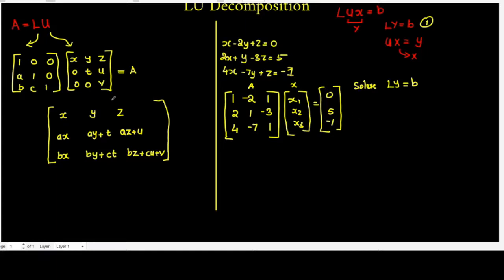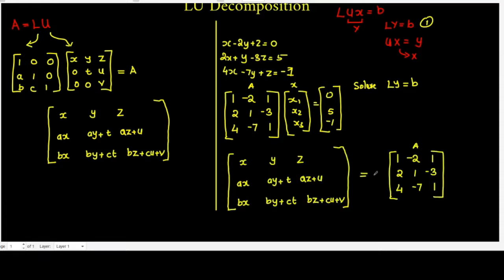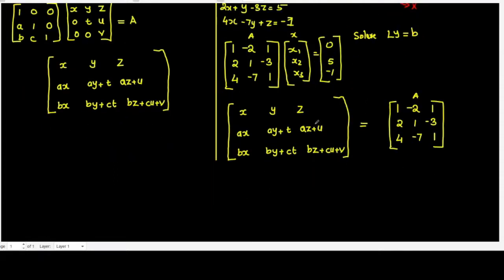Based on that factorization, solving the system gives X equal to 1, Y equal to minus 2, Z equal to 1.